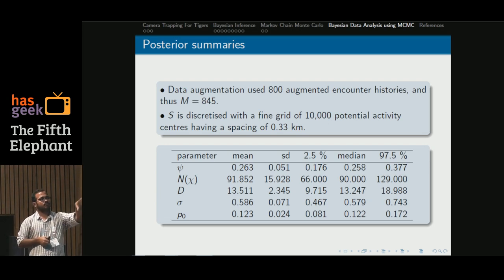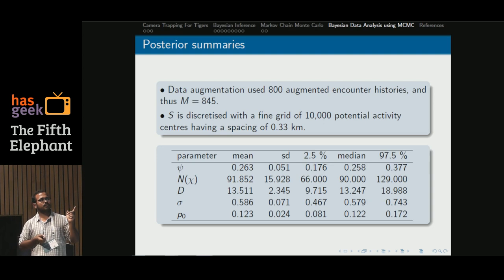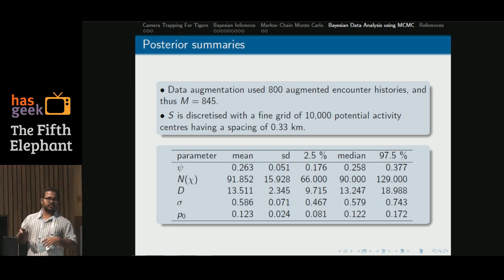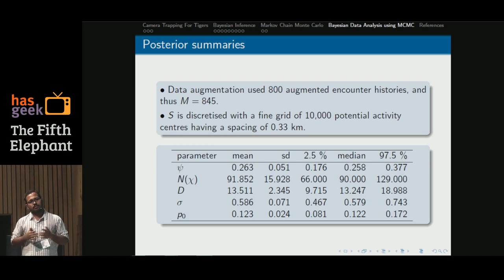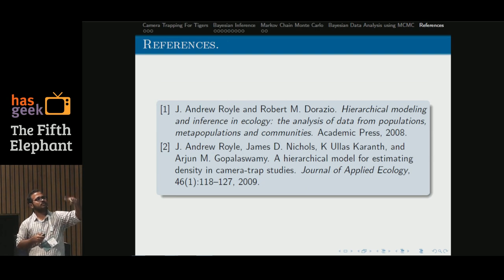Using MCMC, we get the result: the number of individuals in that minimum rectangle is 91 with a standard deviation of 15. The density — number of individuals per 100 square kilometers — is 13.5 based on this study. Using the same data, several other studies obtain different results. The point is: if you do the modeling correctly, you will more often than not get a proper answer. These results are mentioned in Arjun's paper and in the book by Royle and Dorazio.